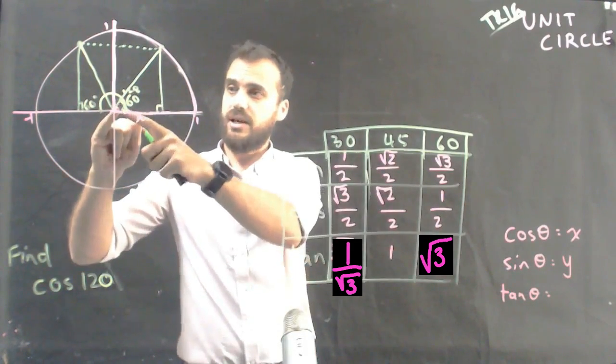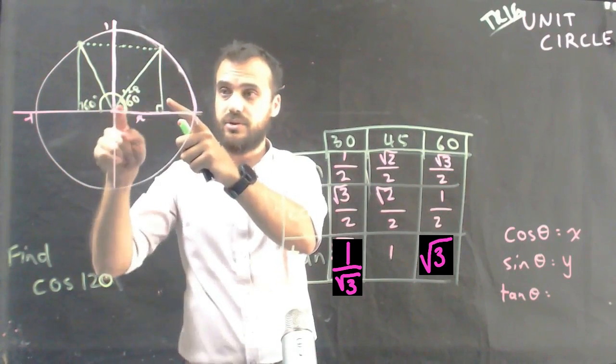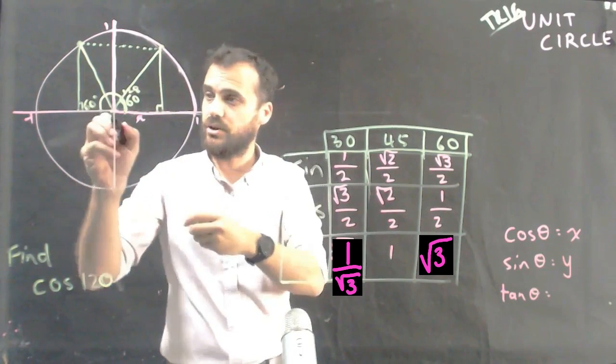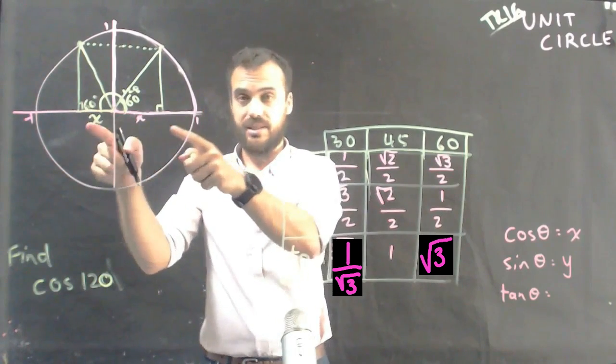And we know from previous experience that cosθ is equal to the x value and sinθ is equal to the y value. Now, if these triangles have the same height and the same hypotenuse and the same angles, then the x values of them must also both be the same.